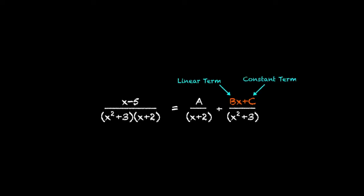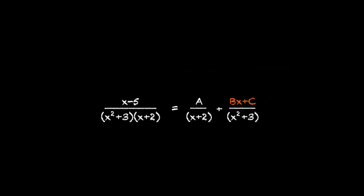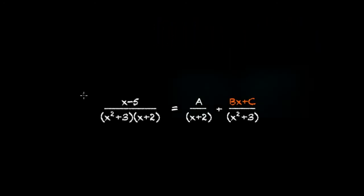Now that we know what our partial fractions need to be, our next step is to work out the values for a, b, and c. So let's start by multiplying both sides by the common denominator, x squared plus three times x plus two.